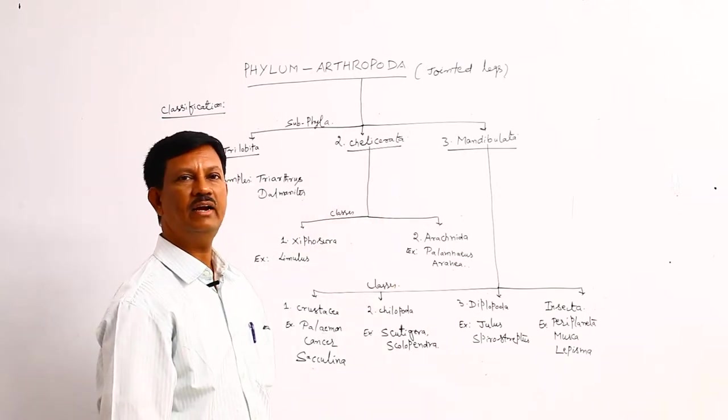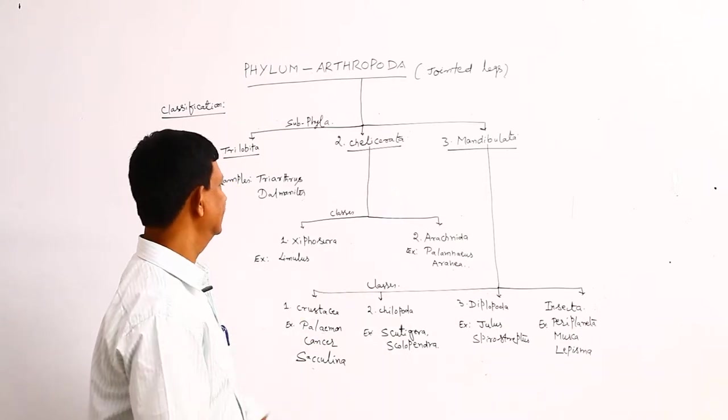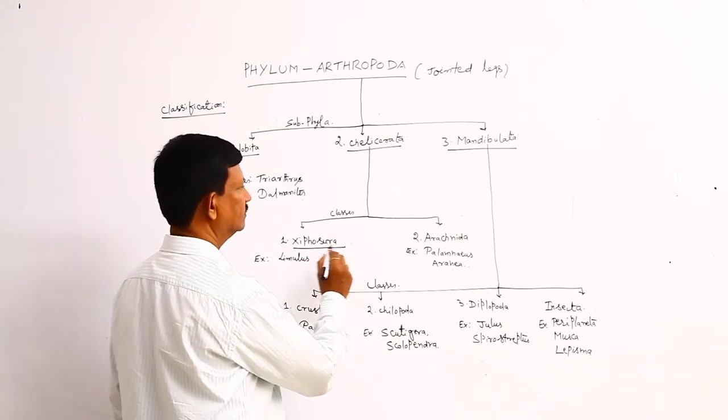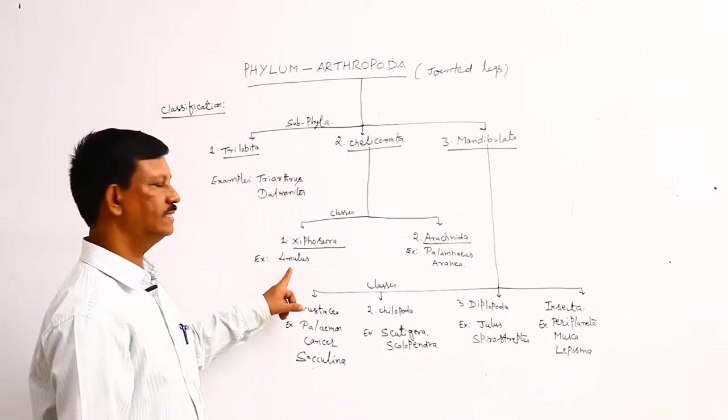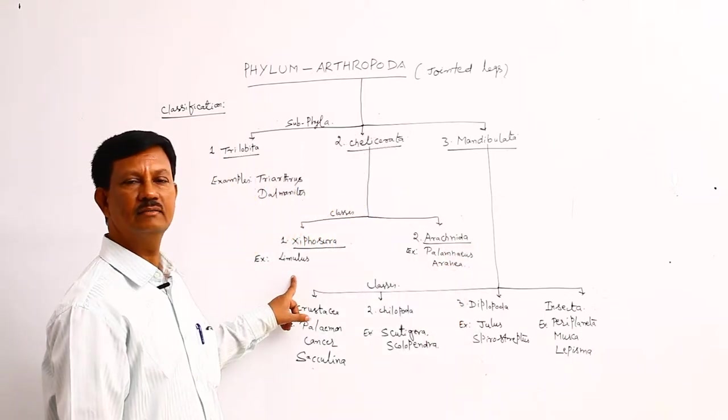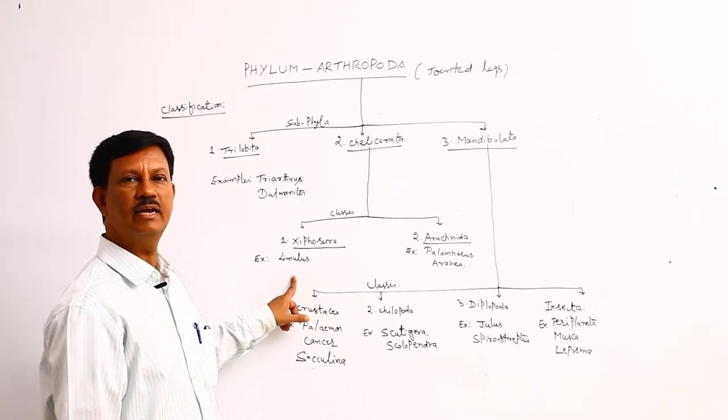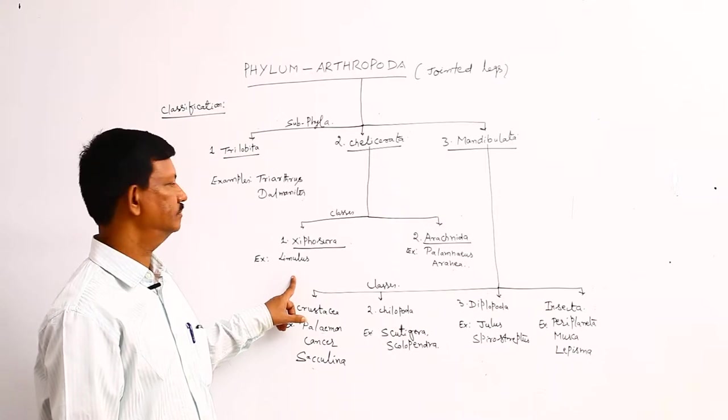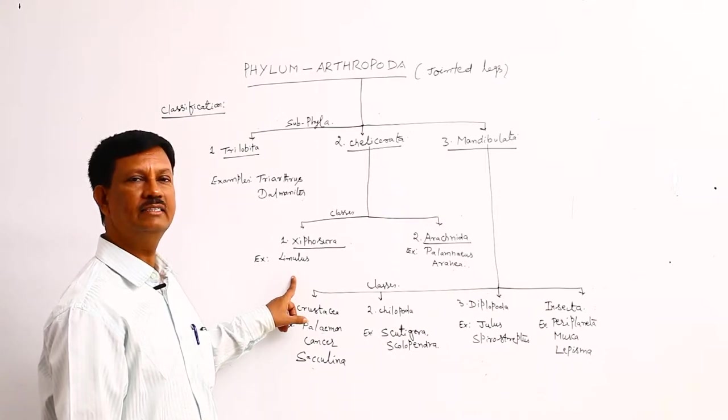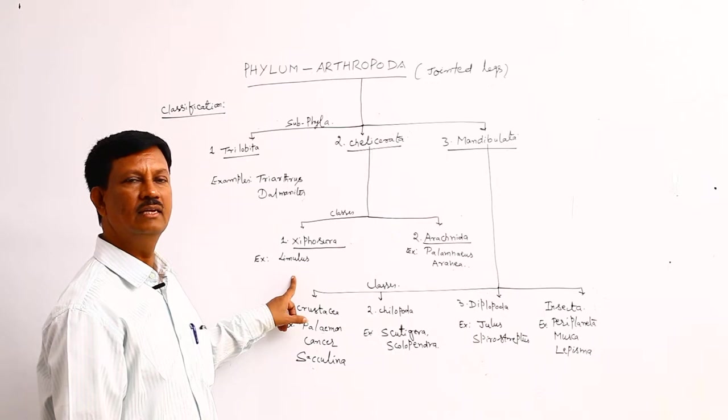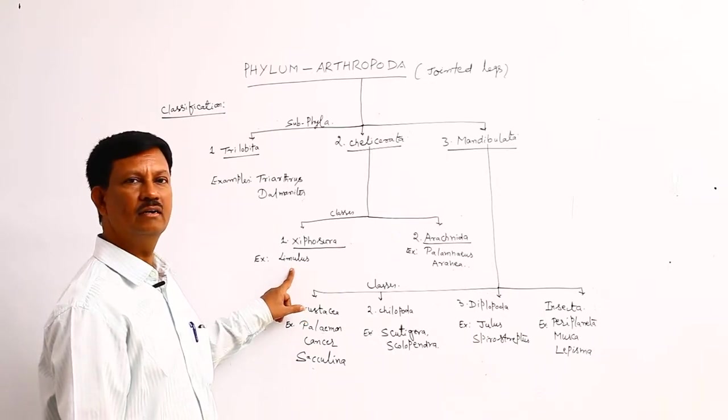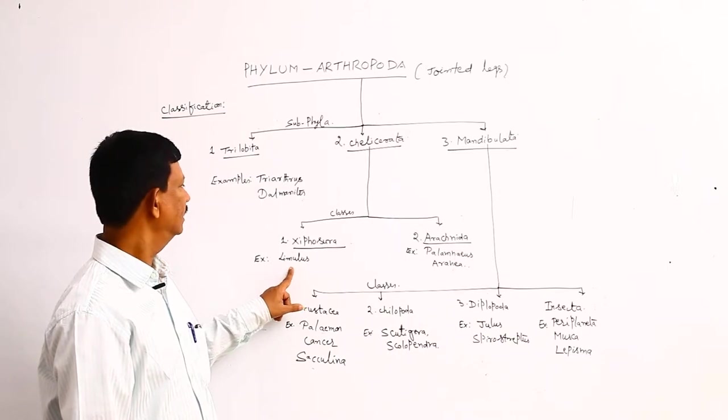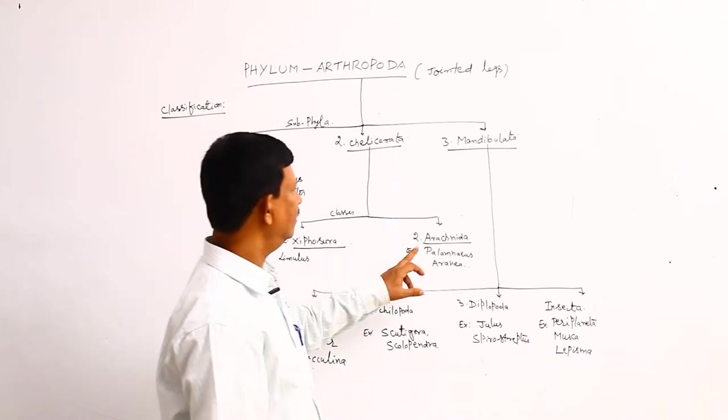This sub-phylum is divided into two classes: Xiphosura and Arachnida. Xiphosura example is the Limulus, commonly known as king crab. It is a living fossil. It does not undergo any change since millions of years. Still same characters are present, hence it is known as the living fossil or king crab.